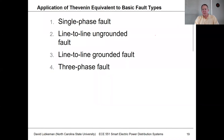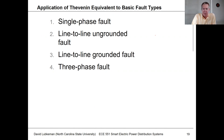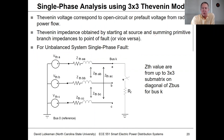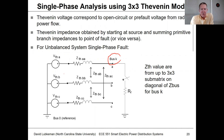Now let's take the seven-equivalent circuit concept and apply this to different fault types. The first thing we'll do is take a look at a single phase fault, assuming we're applying this fault at bus K. From the diagonal of the Z-bus, or through inspection, we're going to get these values.